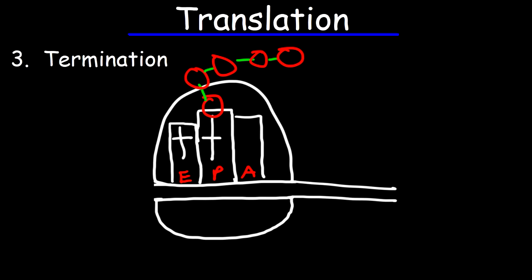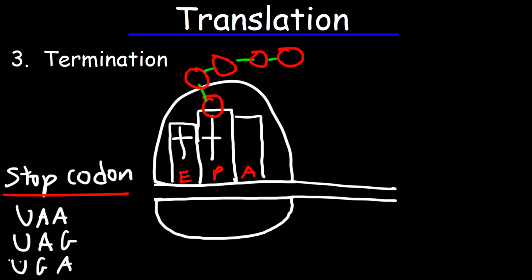The last step of translation, the termination step, begins when a stop codon is read. There are three stop codons you need to be familiar with. The first one is UAA, the second one is UAG, and the third one is UGA. These stop codons, also known as nonsense codons, don't code for any specific tRNA molecule. Instead, when these are read at the A site, they cause a release factor to enter the A site, which causes the small and large ribosomal subunits to disassemble. This is where translation ends, and the protein leaves the ribosome, where it eventually goes to the Golgi body for further processing and modification.